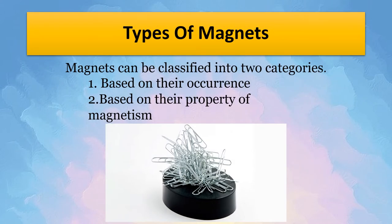Let's look at the different types of magnets. Magnets can be classified into two categories. The first one is based on their occurrence and the second one is based on their property of magnetism. First, let's look at the categories based on their occurrence.